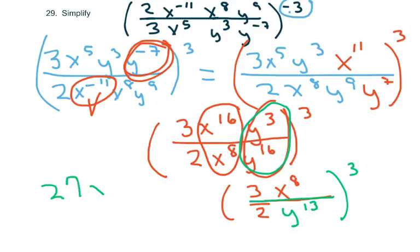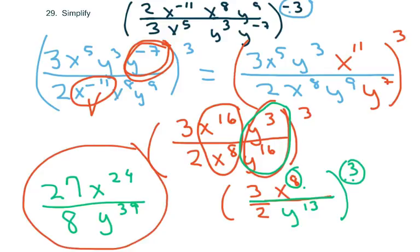Now just cube everything here, and we'll be done. So we get 27x. Remember, you're going to use your power property. It means you multiply these two. That's to the 24th over 2 cubed is 8, y to the 39th. Okay, so that's that. Of course, you can do it any way you want. You could have taken care of the inner part and then flipped it and done whatever you wanted there. All right.